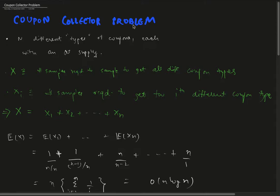For example, X_1 would be one because the very first coupon we draw would be the first different coupon. X_2 represents the number of samples required to be drawn to get the second different type of coupon.